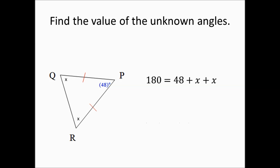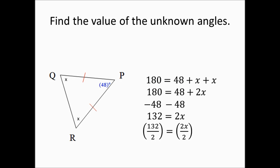The rest becomes algebra. We combine like terms: 180 equals 48 plus 2X. We subtract 48 from both sides: 180 minus 48 gives us 132, so 132 equals 2X. We then divide both sides by 2: 132 divided by 2 equals 66. So the value of the unknown angles is 66 degrees.